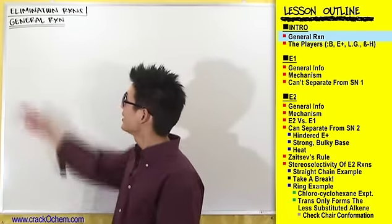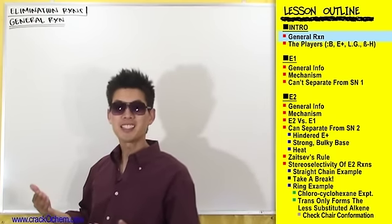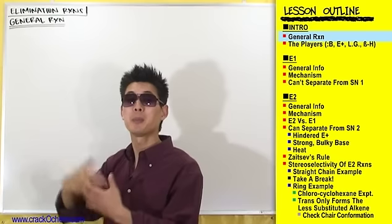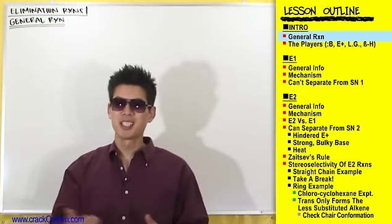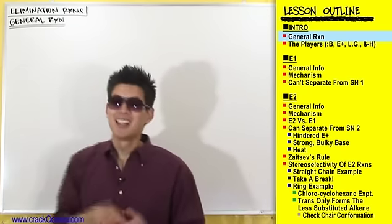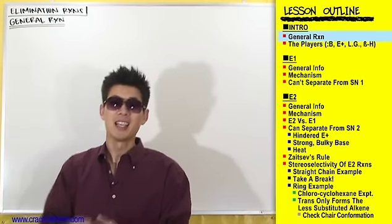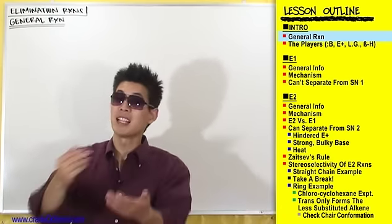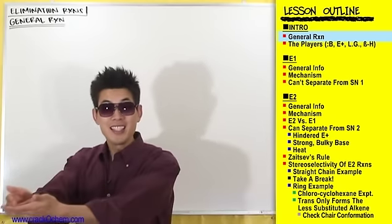Let's get started with the general reaction for these elimination reactions. Just like always, I don't want you guys to get bogged down with the details — I just want you to get the big picture for what's going on in an elimination reaction. So first things first: what type of compound is going to undergo an elimination reaction? It's important to be able to look at a compound and identify its likely reaction type. For example, if you look at an alkene — a double bond — you should say that an alkene is probably going to undergo an addition reaction.